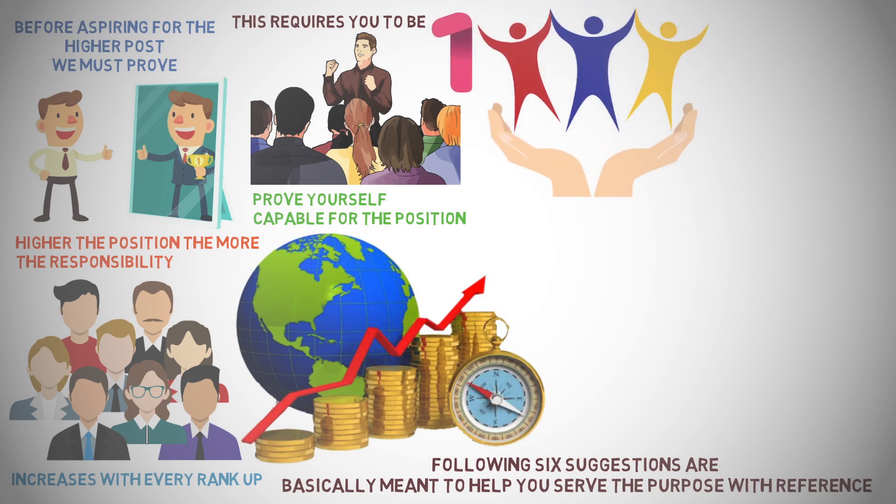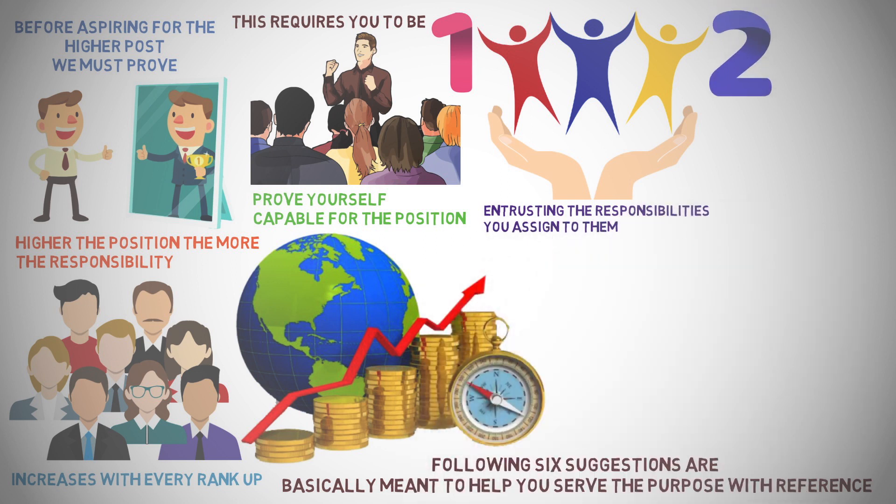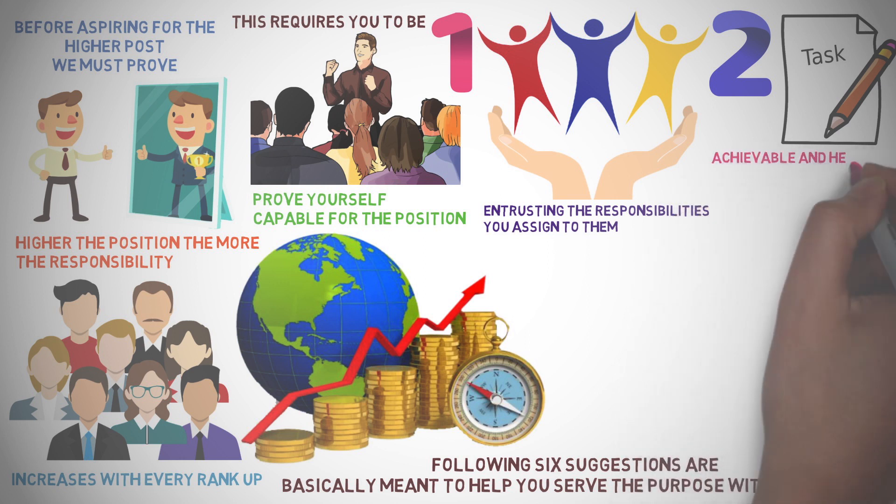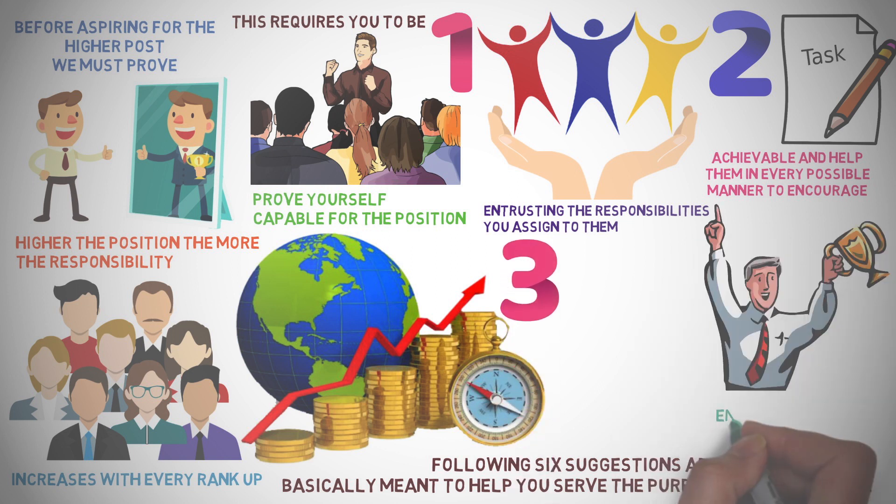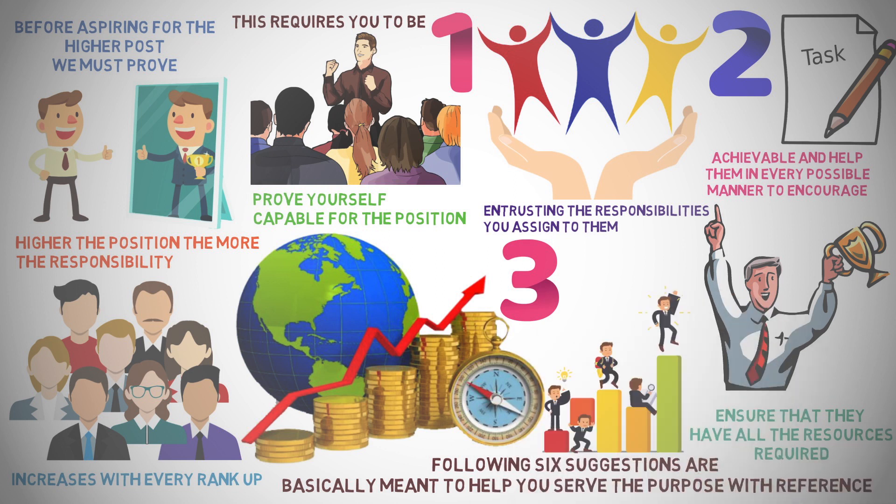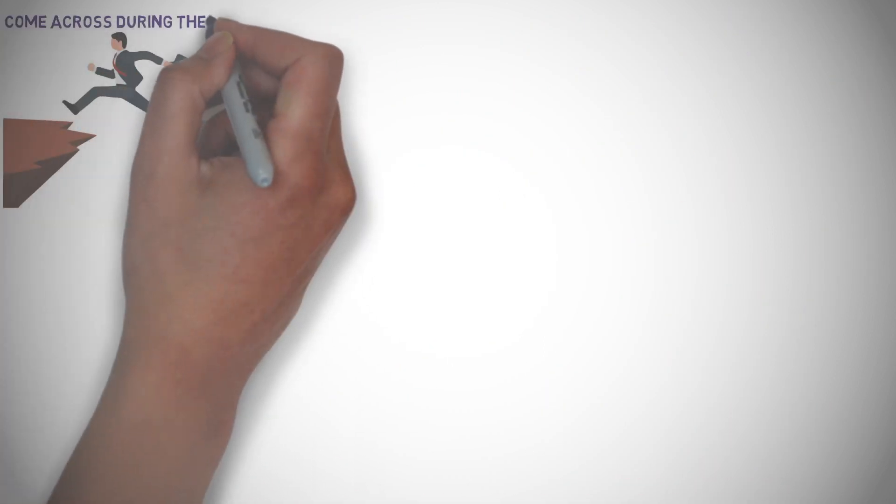Following 6 suggestions are basically meant to help you serve the purpose with reference to the new economy context specifically. Number 1. Empower your subordinates by entrusting the responsibilities you assign to them. Number 2. Ensure that the tasks you assign to them are achievable, and help them in every possible manner to encourage them for its effective accomplishment. Number 3. Ensure that they have all the resources required for achieving their respective targets while you also need to anticipate the potential obstacles they may come across.